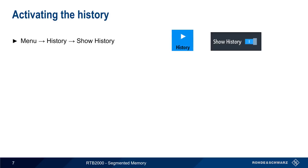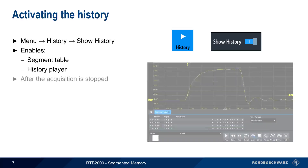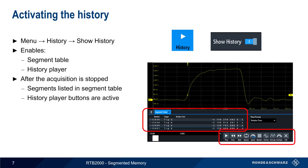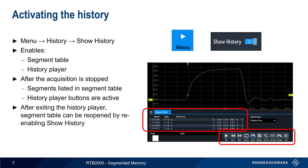To start history mode, choose History from the RTB menu, and then enable Show History. Enabling history brings up the segment table and history player, although both of these will be inactive during an acquisition. When acquisition is stopped, the segment table will be populated with the acquired segments, and the history player buttons will become active. Note that even after exiting history, the segment table can still be reopened by simply re-enabling Show History.